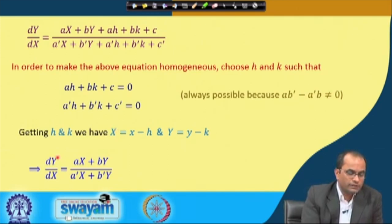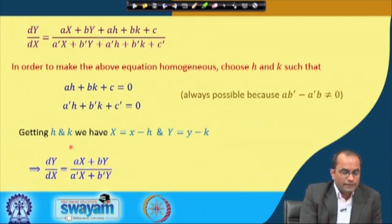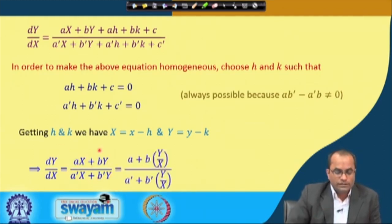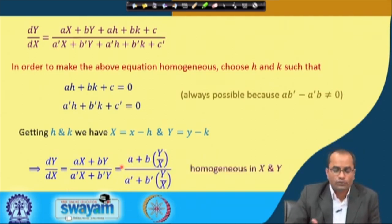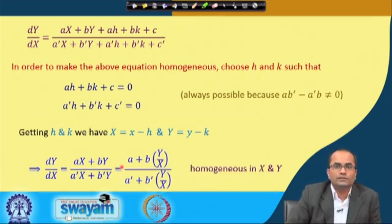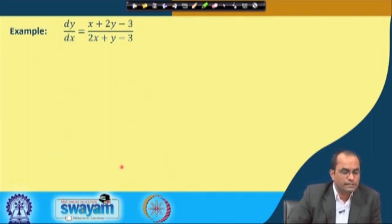With h and k chosen, the equation becomes dY/dX = (aX + bY)/(a'X + b'Y), which is homogeneous in X and Y and can be written in Y/X form. We can now solve it using the technique discussed earlier. Let us do the last example for today's lecture.